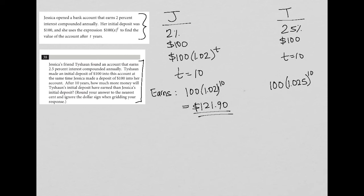So again, back to the calculator, 1.025 to the 10th power, and then multiply that by the $100 initial deposit. And what I'm getting for Tyshawn is $128.01.